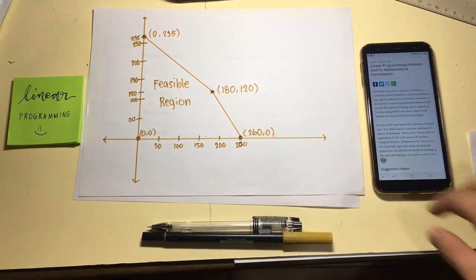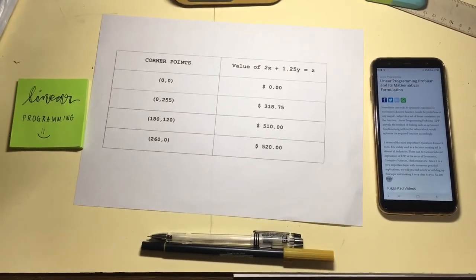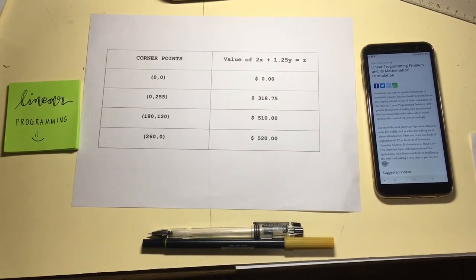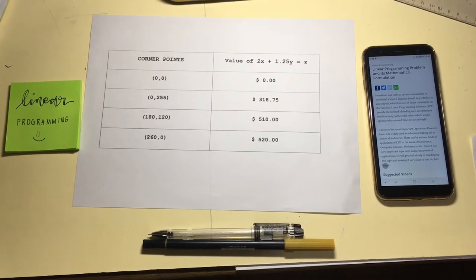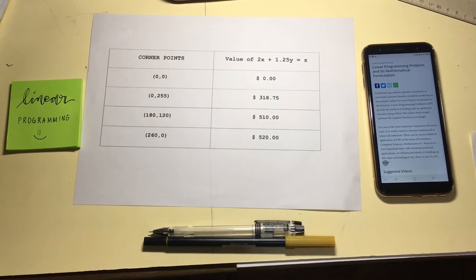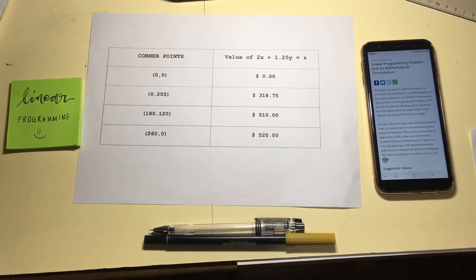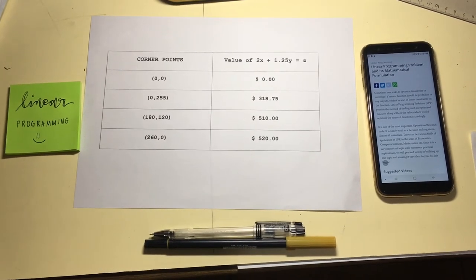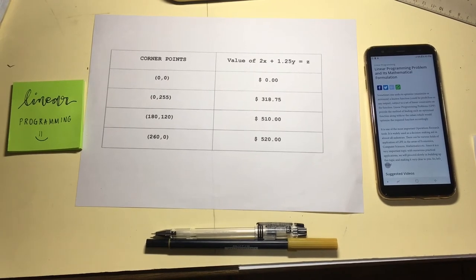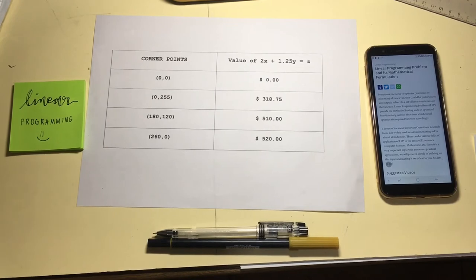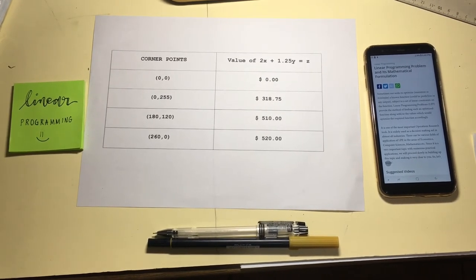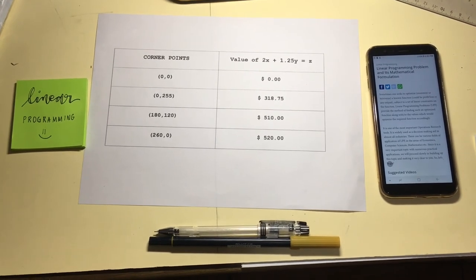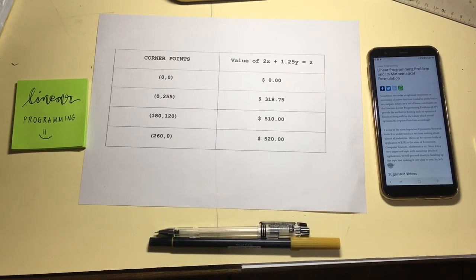Lastly, since we have four corner points, we will substitute all four of them to our objective function which is 2X plus 1.25Y equals Z and compare their sum with each other. The highest sum will represent the optimal or maximized profit that the candy manufacturer can have and will give him an idea of what mixture of candies he should sell in his shop to boost his profit. The table shows that the largest value of Z is $520 and the corresponding optimal solution is 260 and 0. Thus, the candy manufacturer attains maximum sales of $520 when he produced 260 pounds of mixture A and none of mixture B.